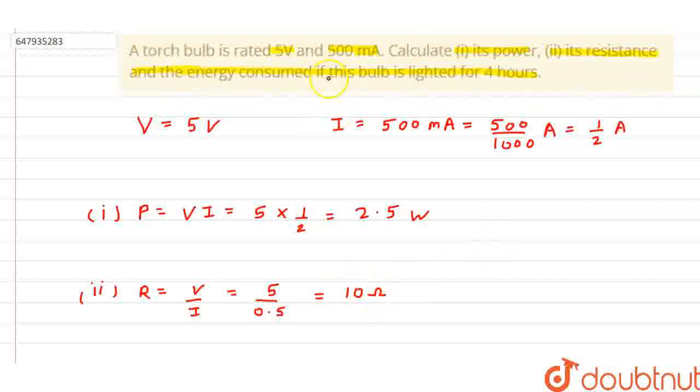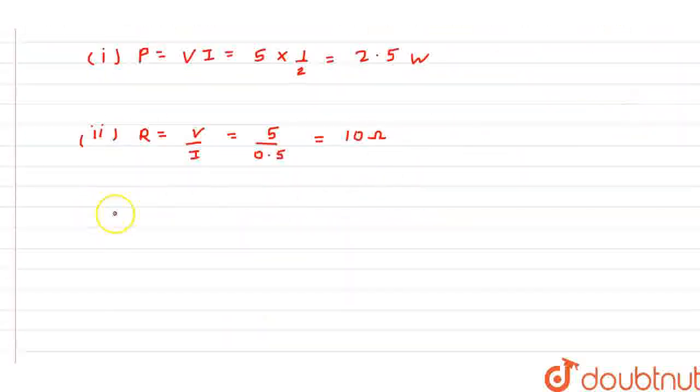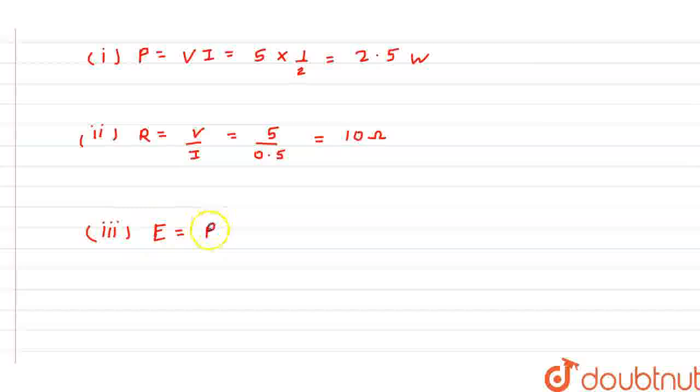Third thing, energy consumed if the bulb is lighted for 4 hours. So, energy equals power into time. Power is 2.5 watt.